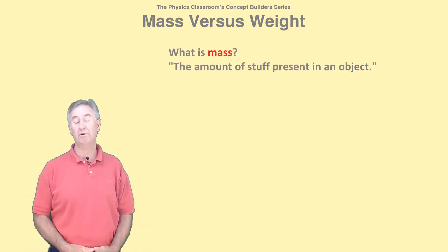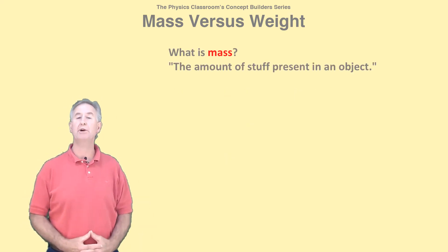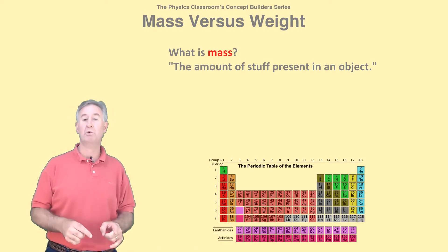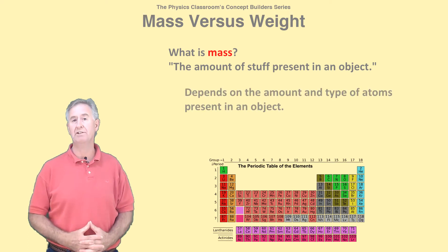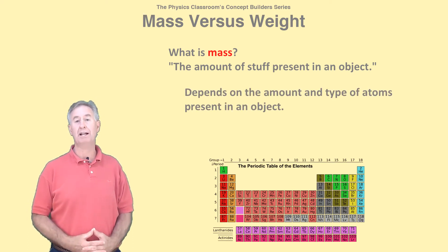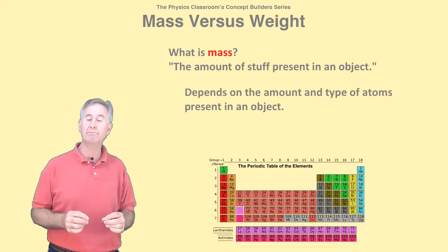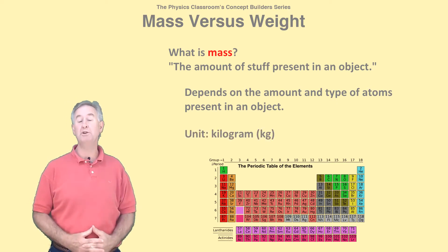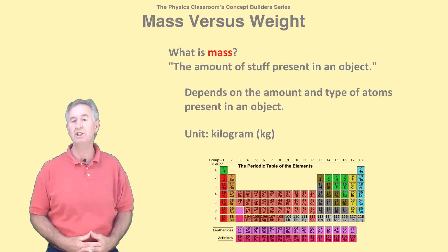Mass is the amount of stuff, or more precisely, matter present in an object. Matter consists of atoms. Atoms are what give objects their mass. So the mass of an object depends on the number of atoms and the type of atoms that are in it. The standard metric unit of mass is the kilogram, abbreviated kg.